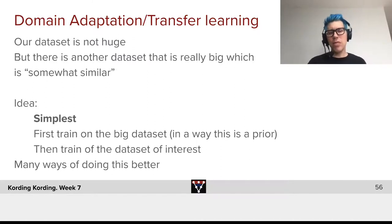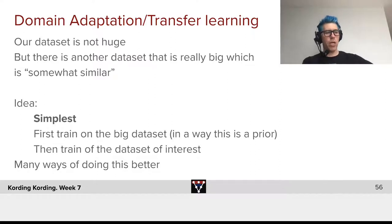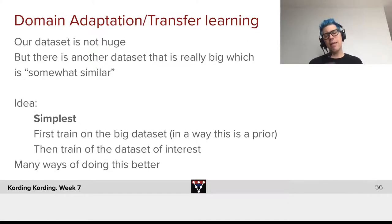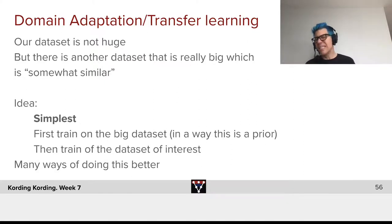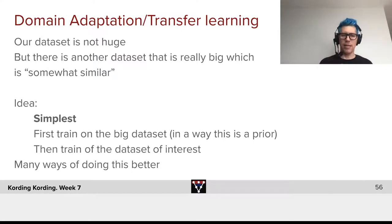And somewhat similar could be: I have a photo of a potential tumor, and I still use ImageNet. Because ImageNet images are made in a slightly similar way to tumor images — similar enough that it's useful to use that.